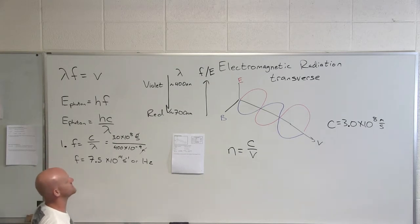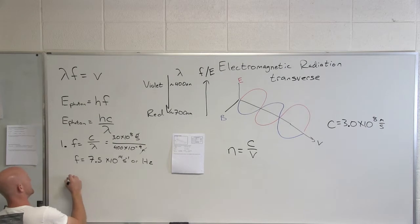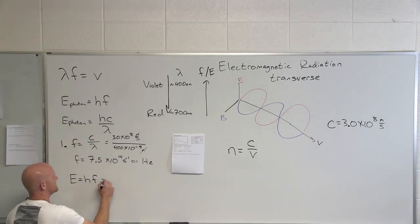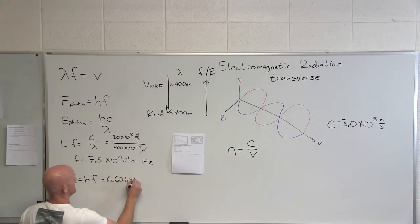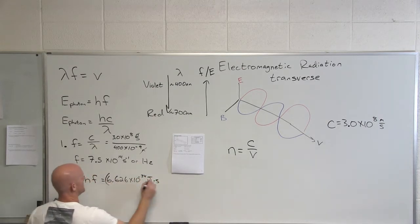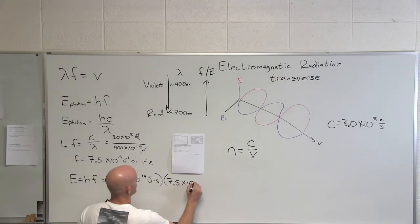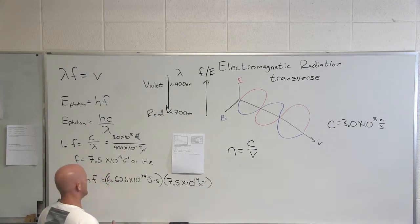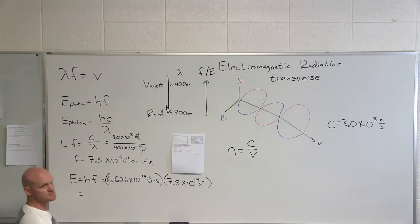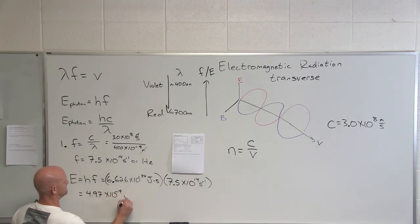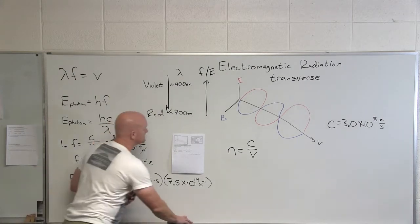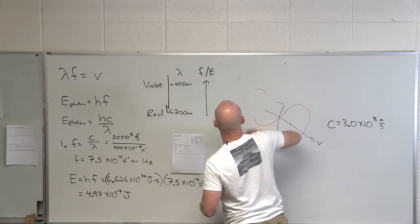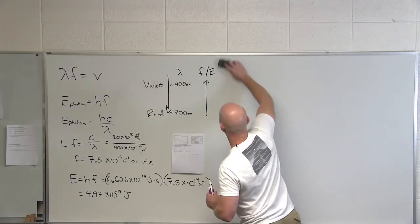Second part of this question is what is the energy, in joules as well as in electron volts. The energy, since we have the frequency now, I'm going to use E = hf. If we started with the wavelength, we could have gone there as well. Planck's constant is 6.626 times 10 to the negative 34 joule seconds times the frequency we just got, 7.5 times 10 to the 14th Hertz. What does this give us for the energy of a violet photon? 4.97 times 10 to the negative 19 joules.